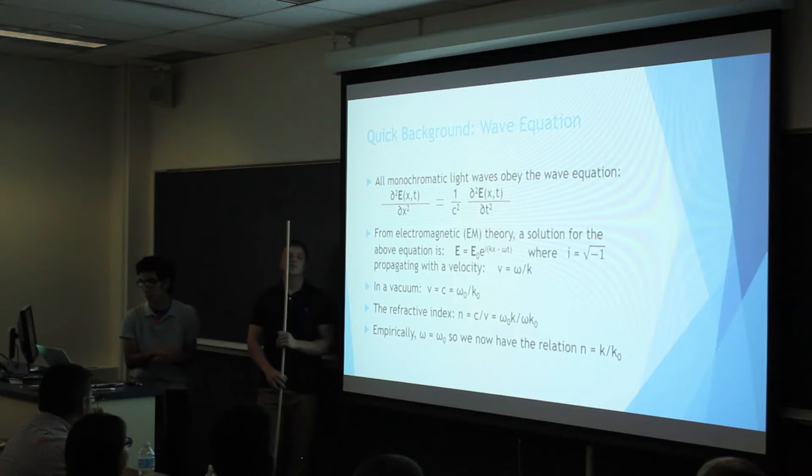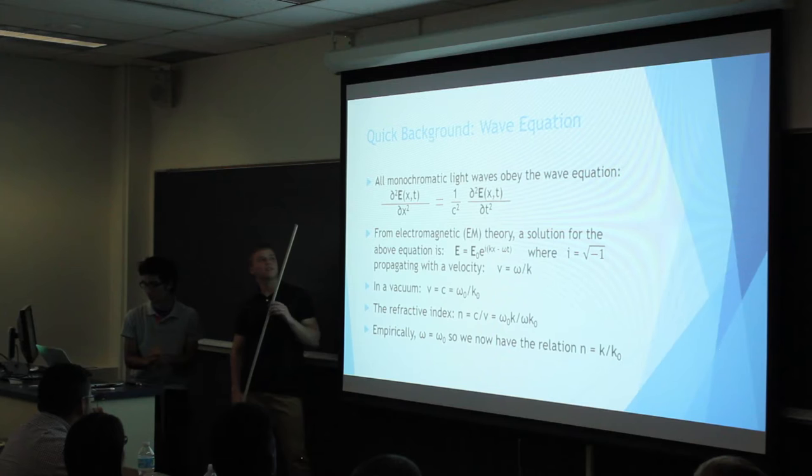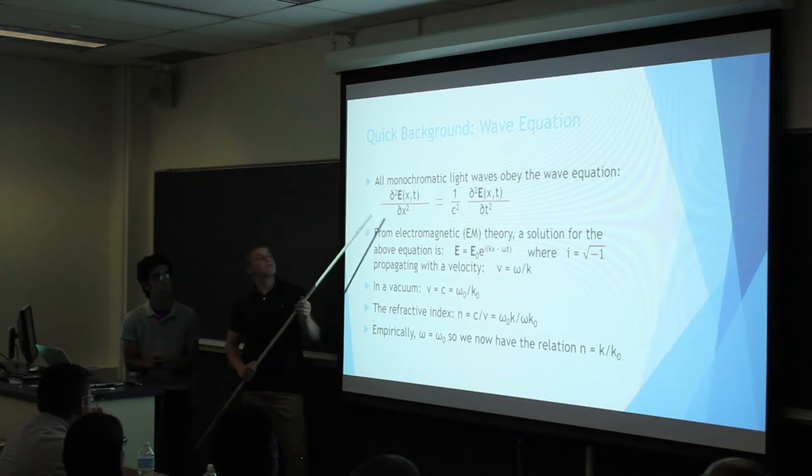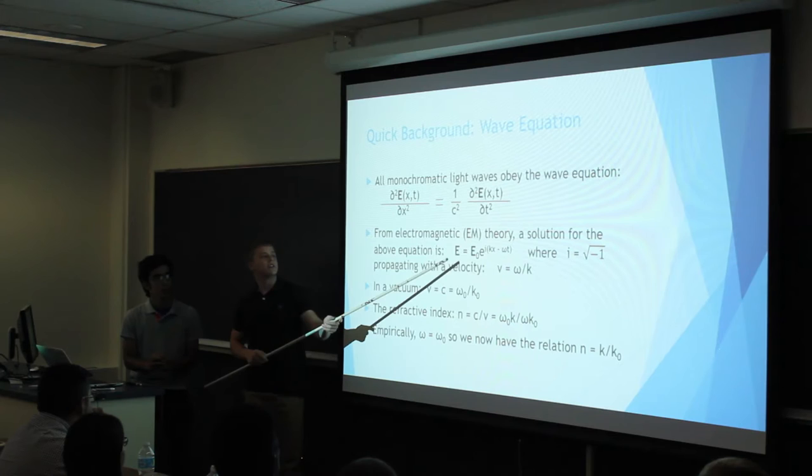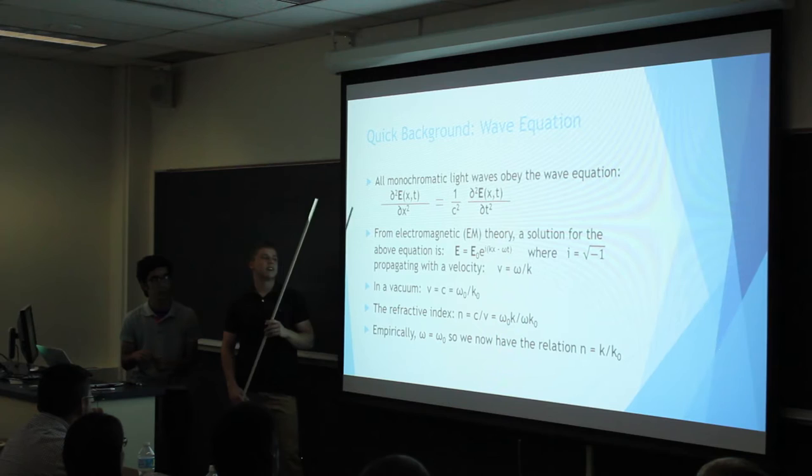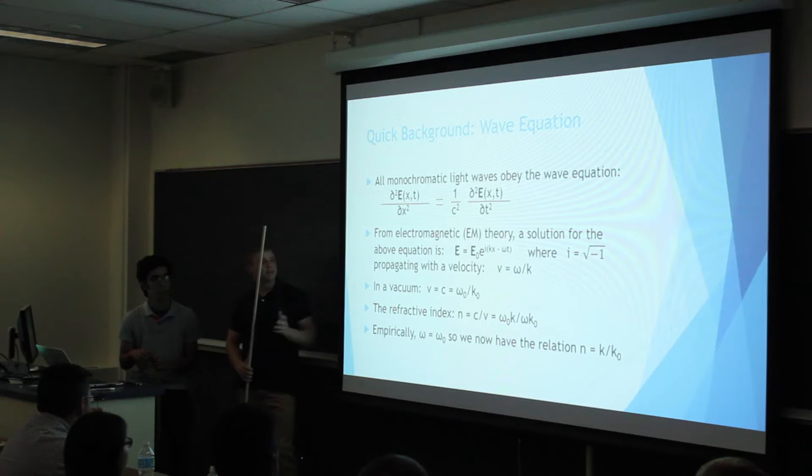Since we're going to be dealing with optics and therefore electromagnetic waves, it's important to understand the wave equation because all monochromatic light waves obey this wave equation, and it's a well-known partial differential equation. From electromagnetic theory, a solution for that equation is one which represents a wave, where i equals radical negative one, and the wave propagates with a velocity equal to the angular frequency over the wave vector.